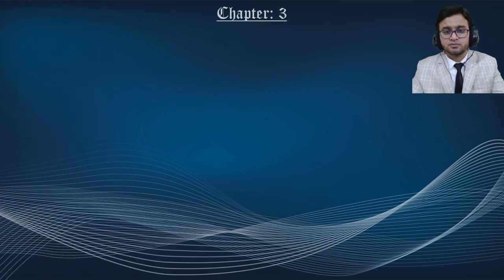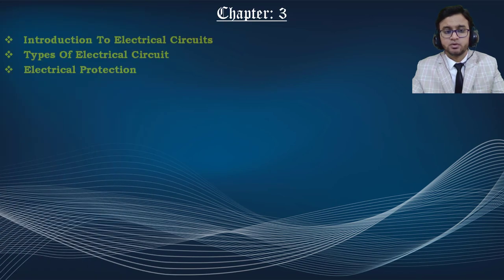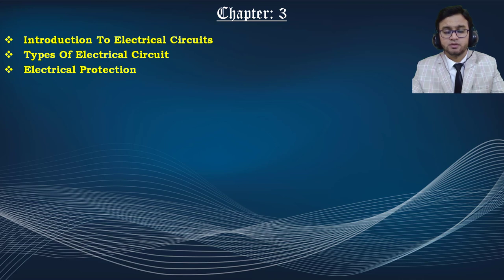Next we have chapter 3, where we are going to discuss electrical circuits. To run a system we have to make a circuit, and these circuits are classified into four types: the closed circuit, the open circuit, the short circuit, and the leakage circuit. We also cover electrical protection devices generally used for safety, like fuses and circuit breakers.